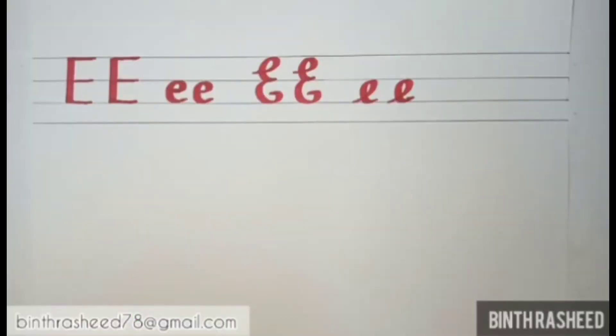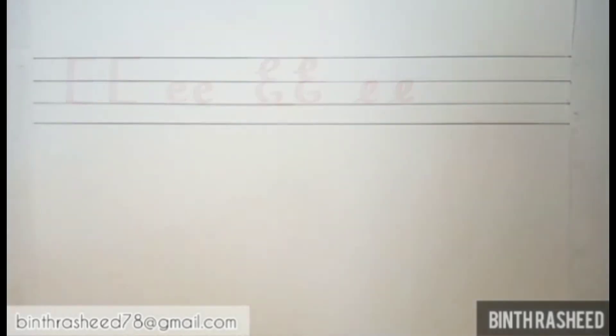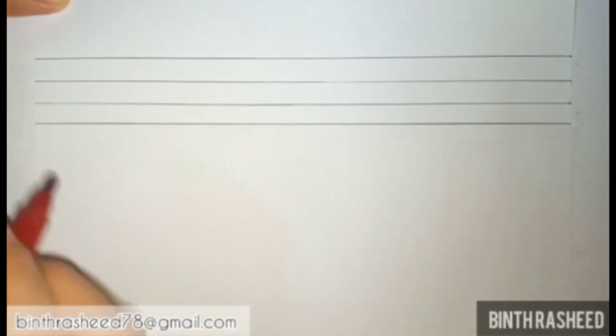Hello everyone, welcome to today's session. In today's session we'll see how to write different forms of E — that is capital E, small e, cursive capital E, and cursive small e. Let's start from capital E.